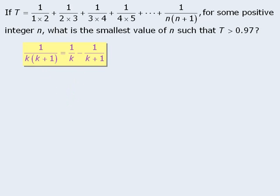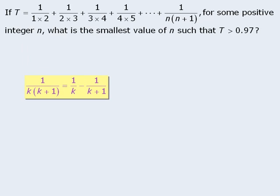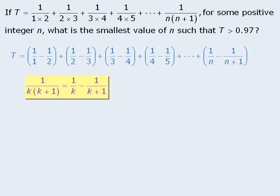So now let's take this useful rule and use it to rewrite the sum equal to T. First we can take 1 over 1 times 2 and rewrite it as 1 over 1 minus 1 half. Next we can take 1 over 2 times 3 and rewrite it as 1 half minus 1 third. Now if we continue this process, we get the following.